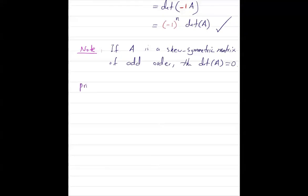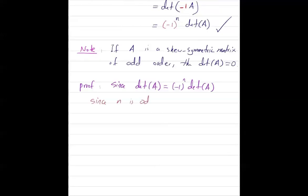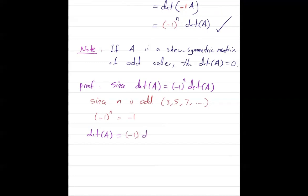Note that since the determinant of a skew-symmetric matrix is negative 1 to the power n times the determinant of A, and since n is odd — like 3, 5, 7, and so on — negative 1 to the power n equals negative 1. This means that the determinant of A is equal to negative 1 times the determinant of A.